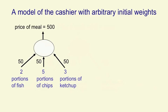Let's suppose that we start with guesses that each portion costs 50. So for the meal with two portions of fish, five of chips, and three of ketchup, we're going to initially think that the price should be 500. That gives us a residual error of 350. The residual error is the difference between what the cashier says and what we think the price should be with our current weights.